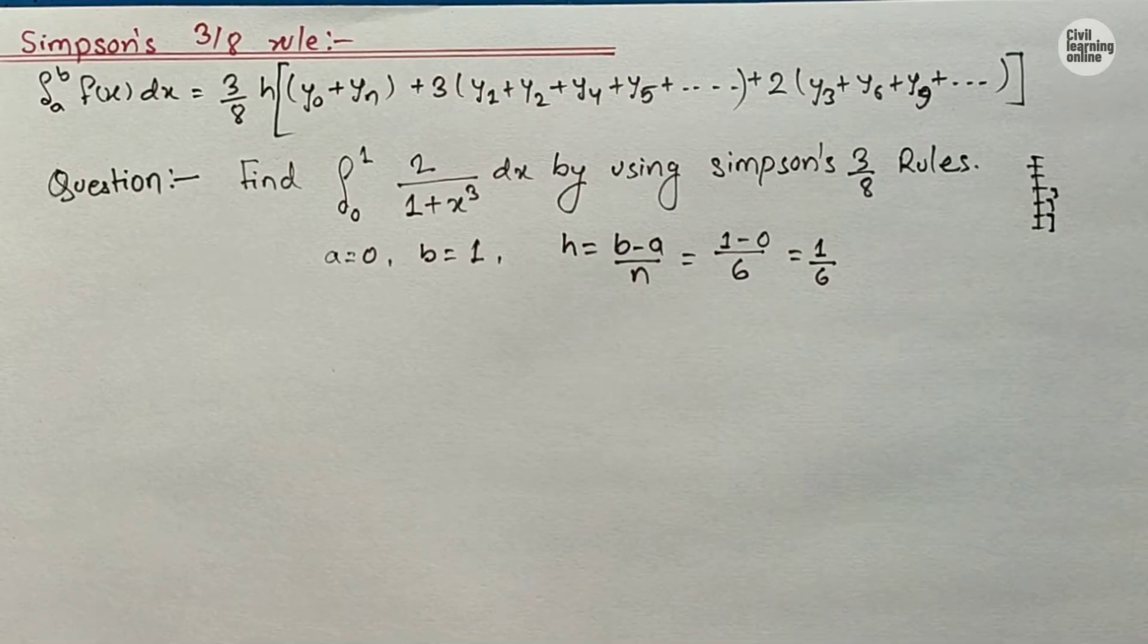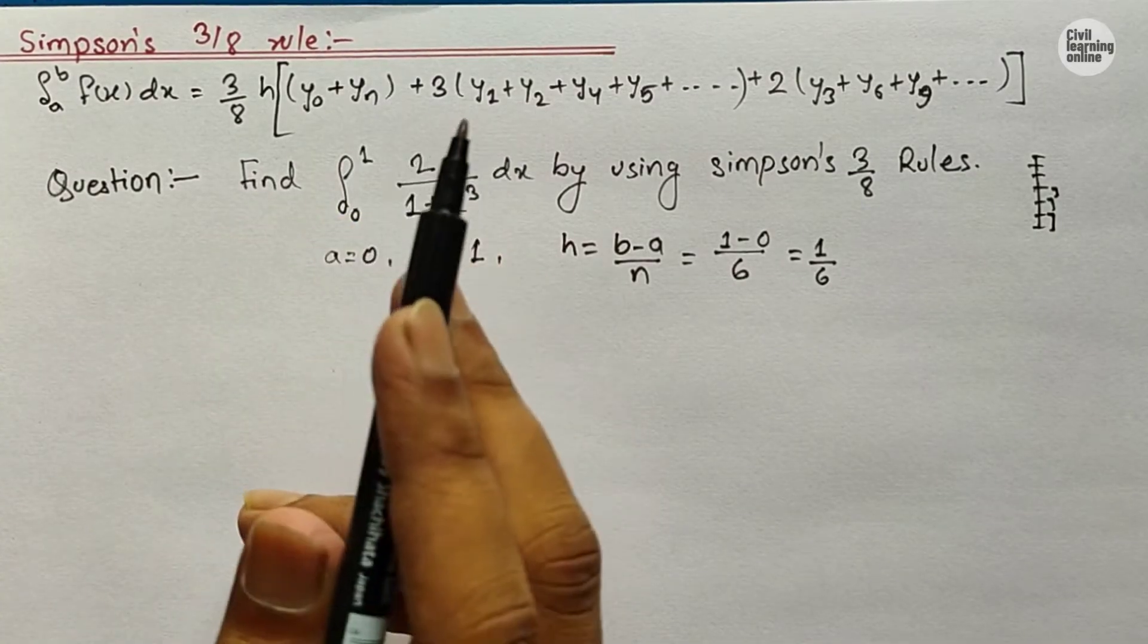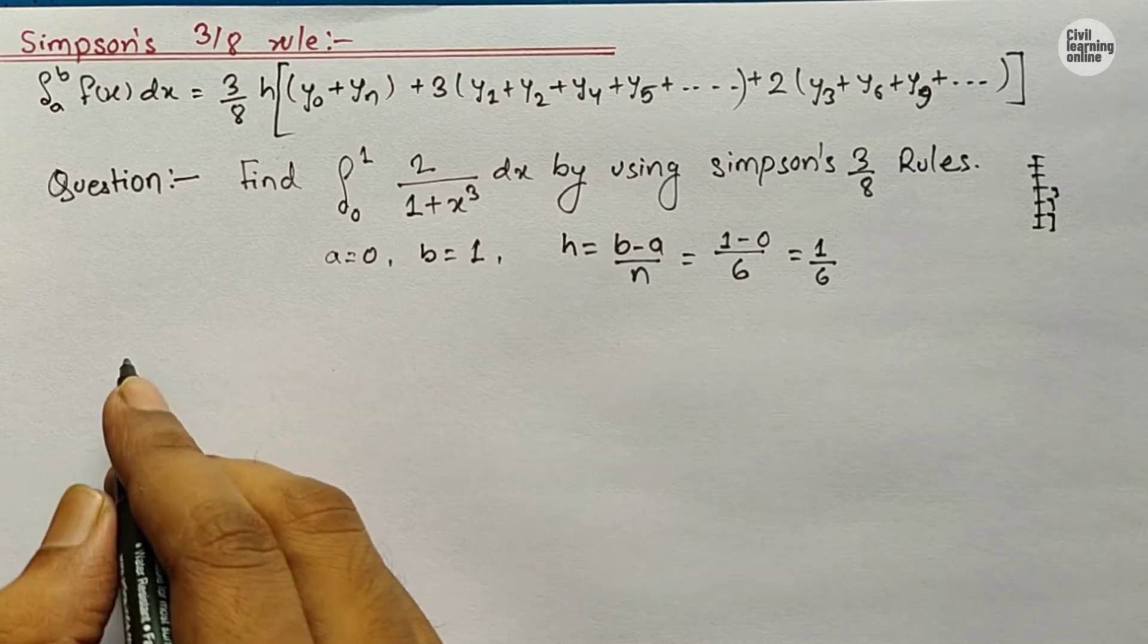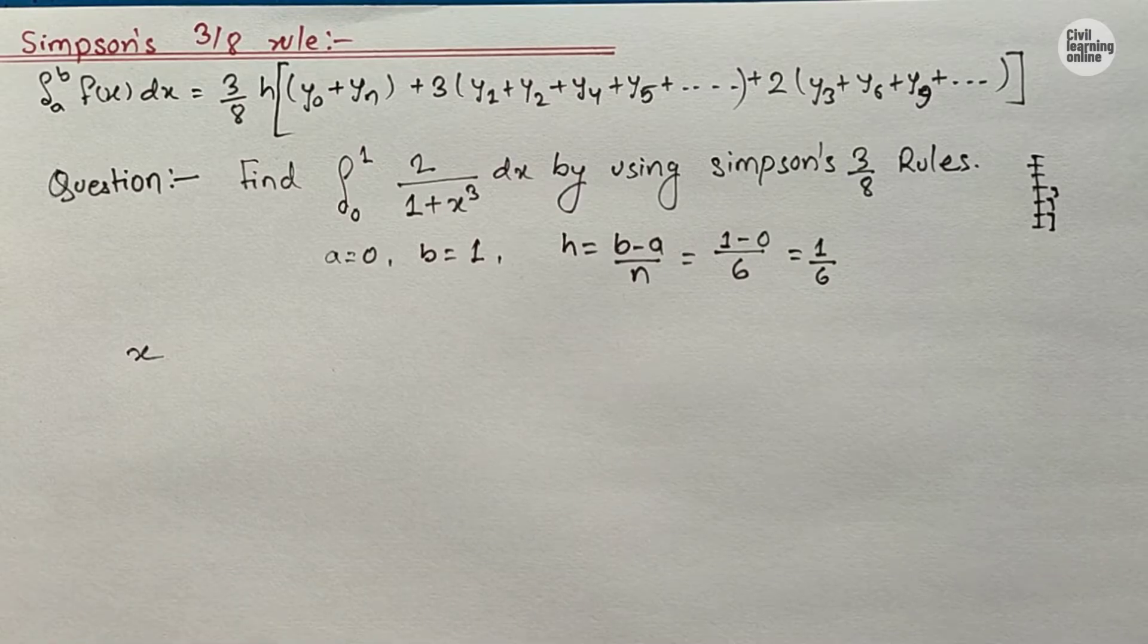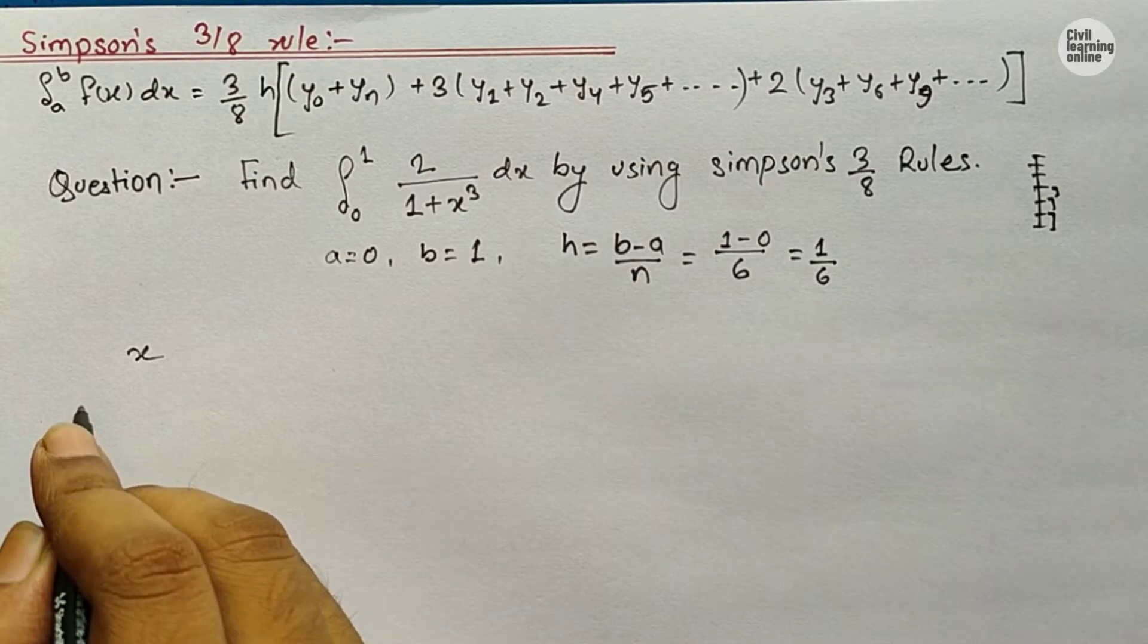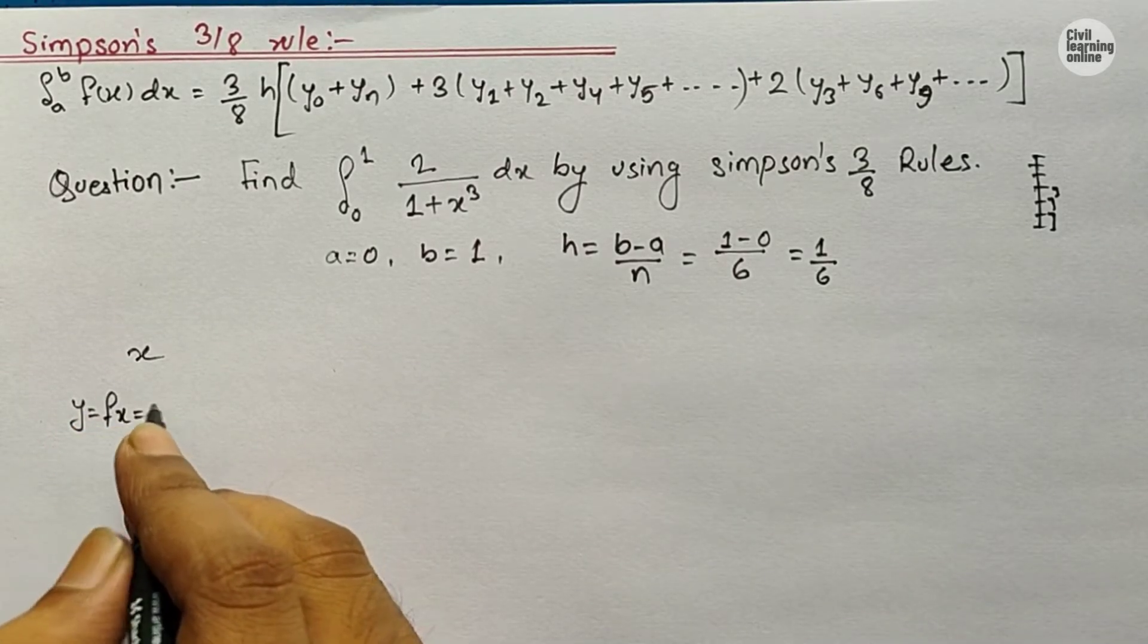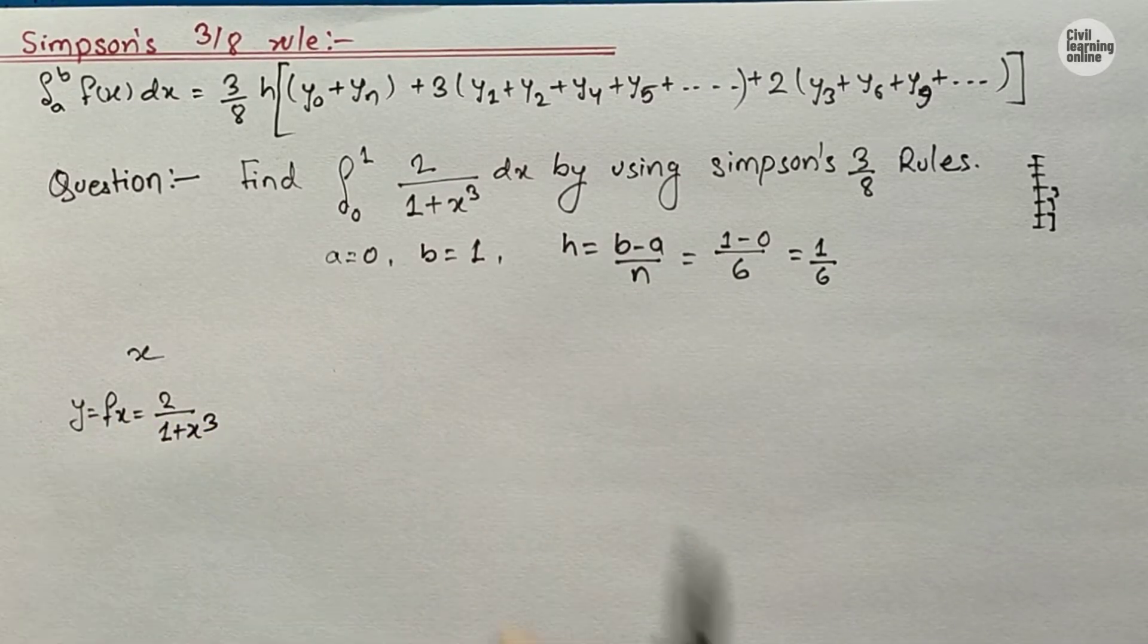Now after getting the value of h, we need to calculate the value of y0, y1, y2, y4, yn for the corresponding value of x. For that we need to draw a table here. So we will substitute the value of x and with respect to that value we will get the value of y. We have here y equals f(x) equals 2/(1+x³). Let me draw a table.